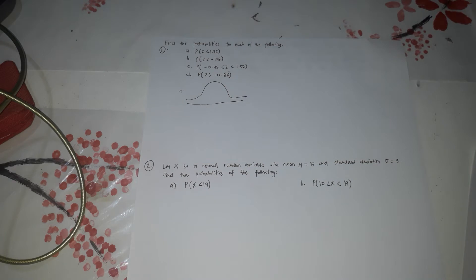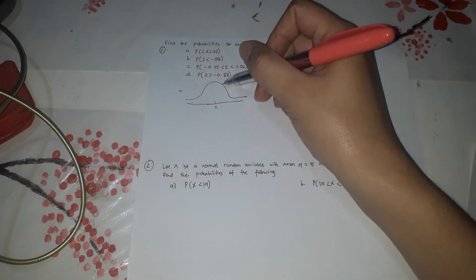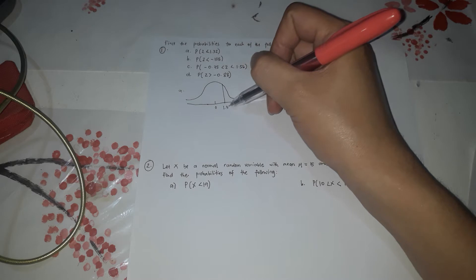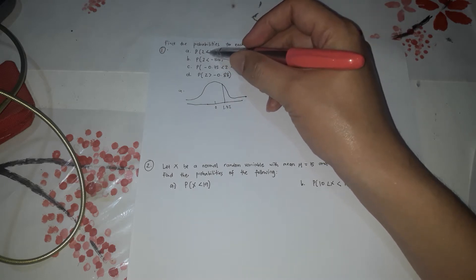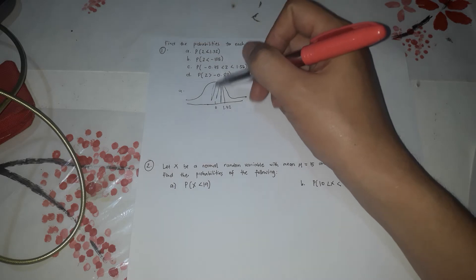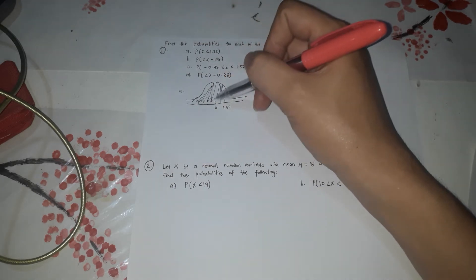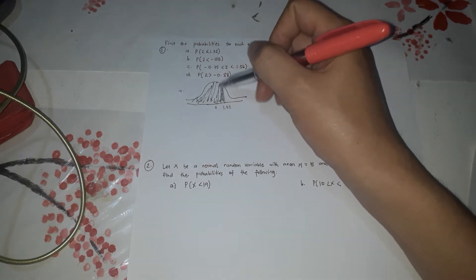So letter A, the first thing we're going to do is draw the normal curve so that it would be easier to understand. So this is 0, so this approximately 1.32 is on the right of 0. So Z is less than. So less than in here to the left. So maximally, it's 1.32.